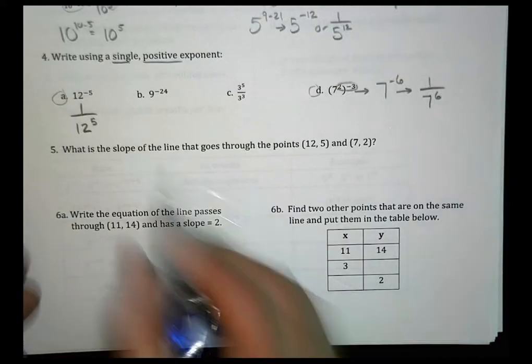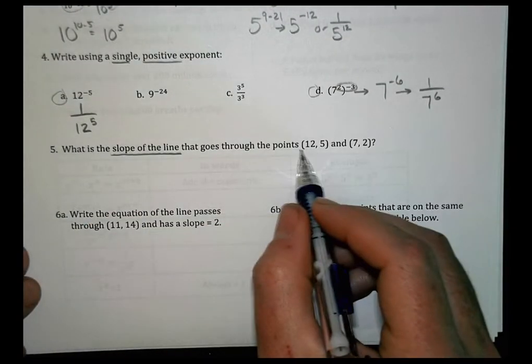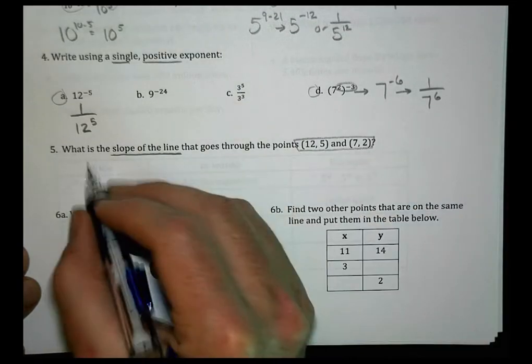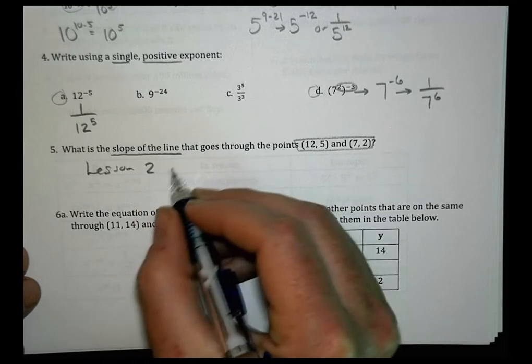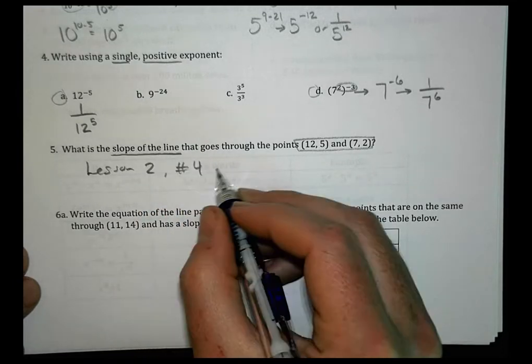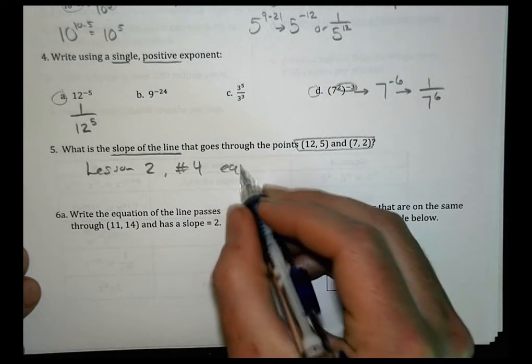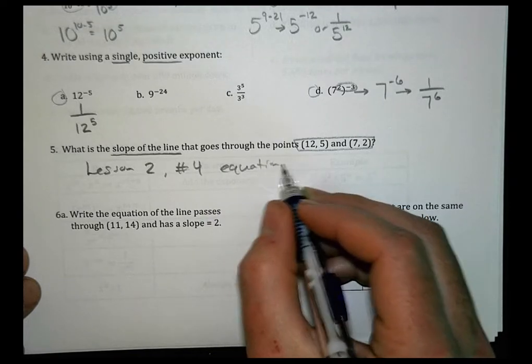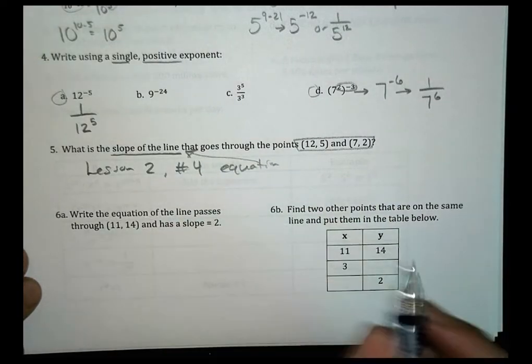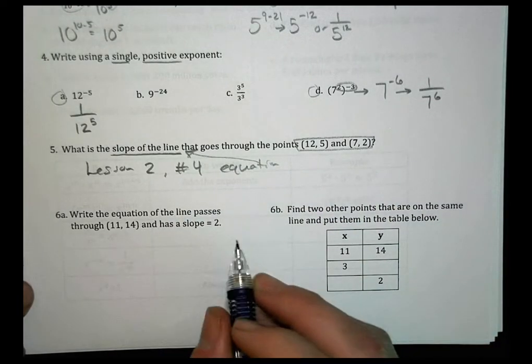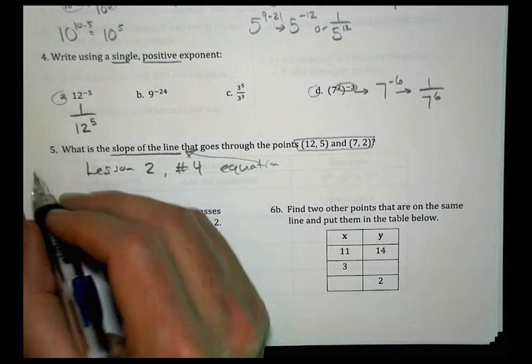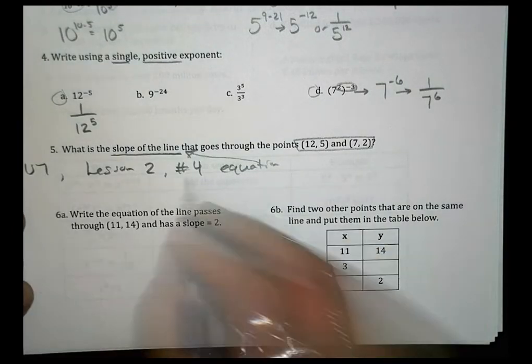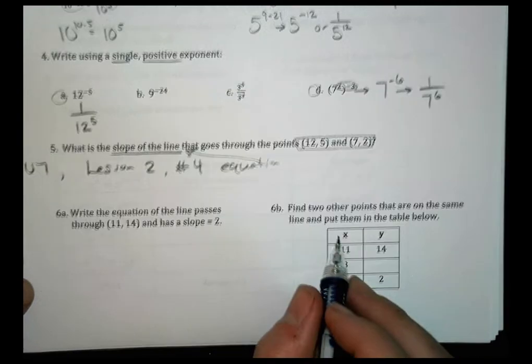Number 5. What is the slope of a line that goes through these points right there? We did a similar problem like this back in lesson 2, and it was number 4. We looked at the equation there and how to do that. So we have the equation for the slope of a line. So you can look back there and see what that was. Review your notes from lesson 2. So it would be unit 7, lesson 2, number 4, and we did that one together.